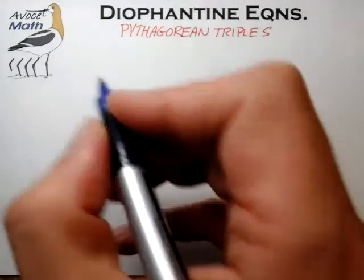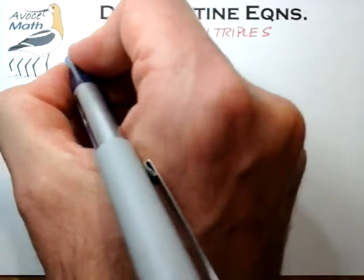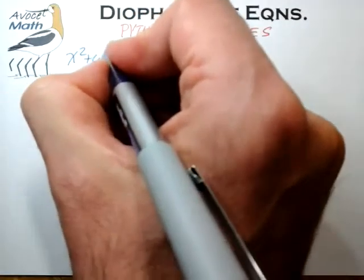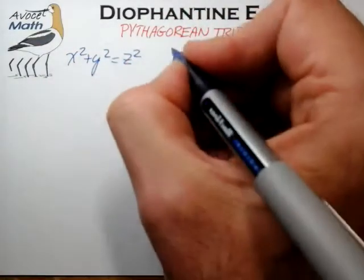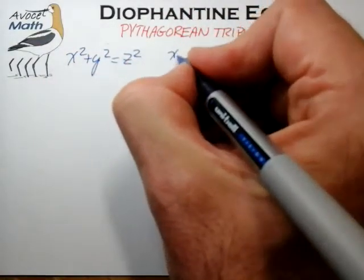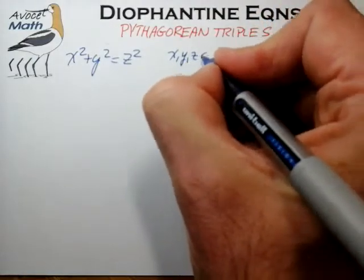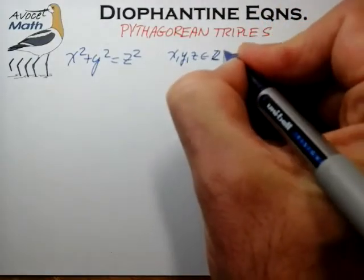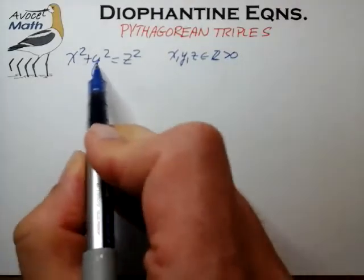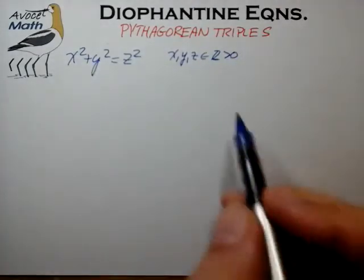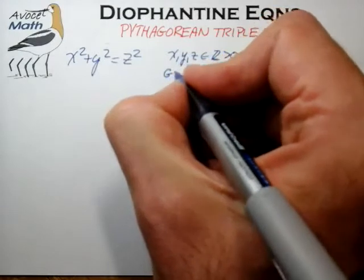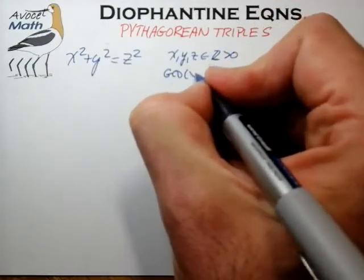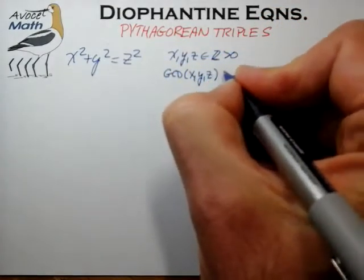Let's take a look at the Pythagorean theorem that we are pretty familiar with: x squared plus y squared equals z squared. In this case, we're looking for integer solutions x, y, and z — specifically integer solutions greater than zero. It turns out that when either x, y, or z is zero, those solutions are not terribly interesting, so we're going to eliminate those from our solution set. We're also looking for the case where the greatest common divisor of x, y, and z is equal to 1.